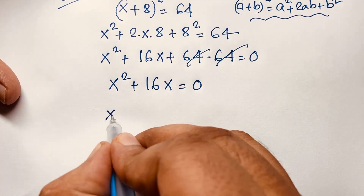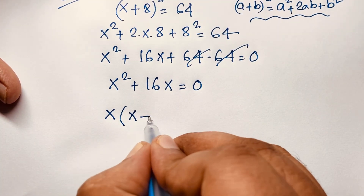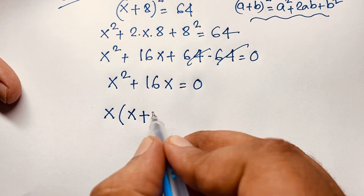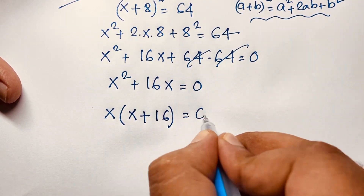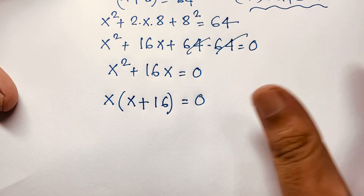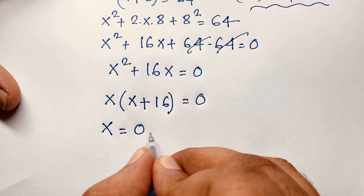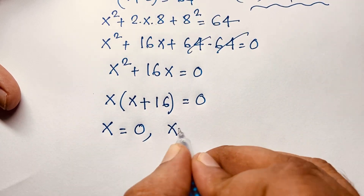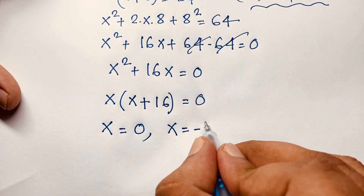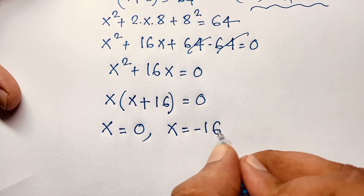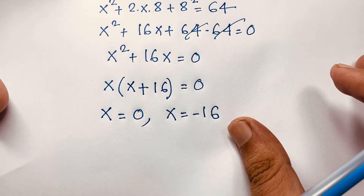Taking x as common: x(x + 16) = 0. There are two cases: x = 0, and x + 16 = 0, which gives x = −16.